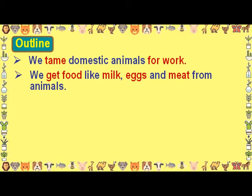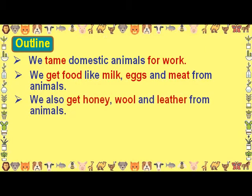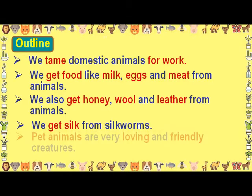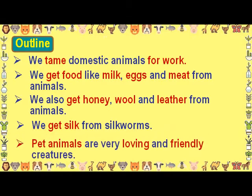Outline: We tame domestic animals for work. We get food like milk, eggs, and meat from animals. We also get honey, wool, and leather from animals. We get silk from silkworms. Pet animals are very loving and friendly creatures.